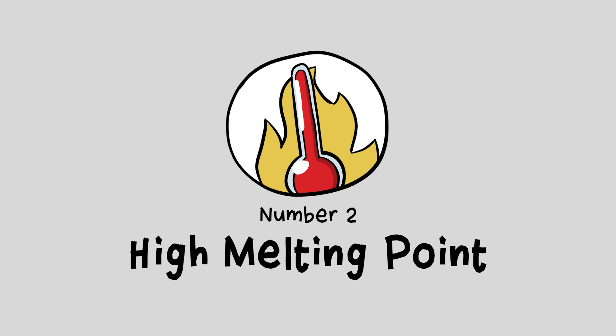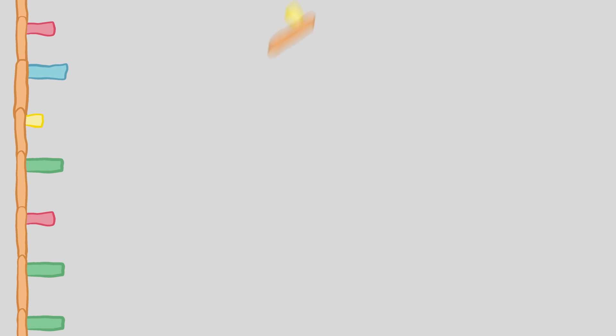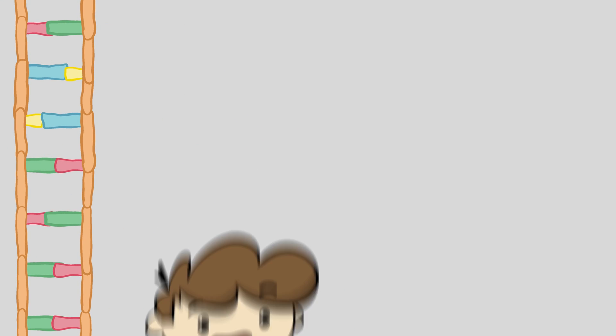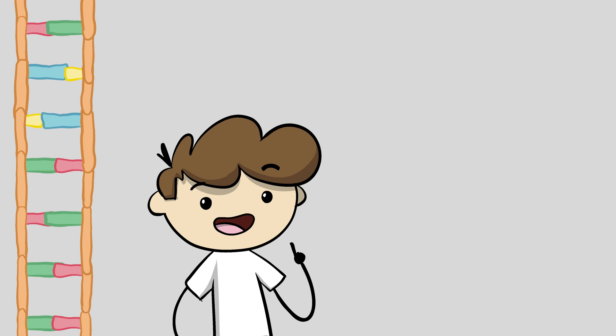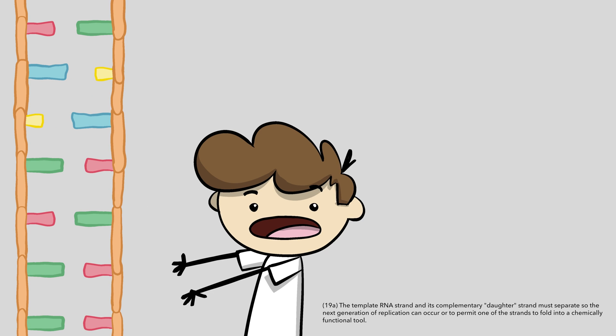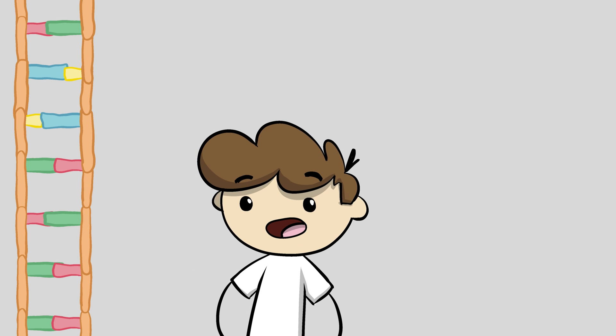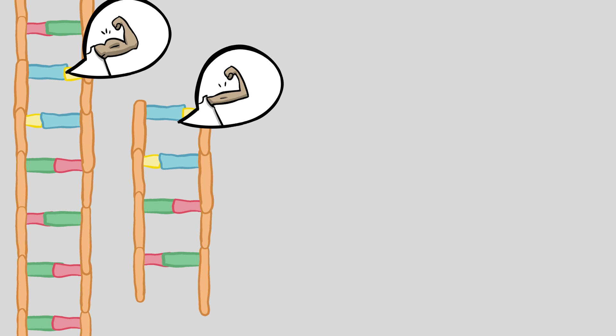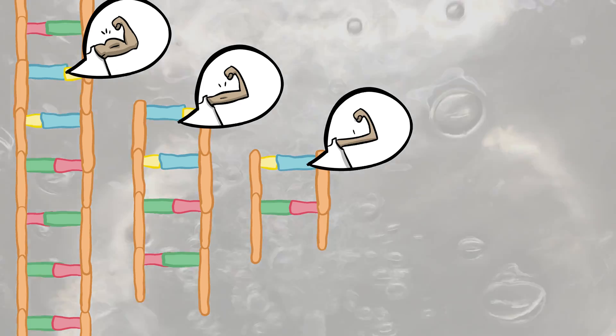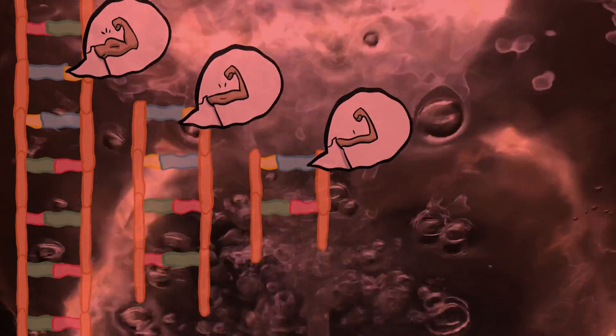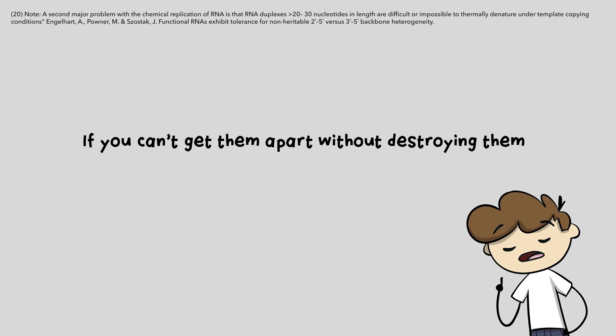Number two, high melting point of long RNAs. In order to be replicated, a single RNA strand has to have some friends to link up with, to make a complementary strand. And then, importantly, the two strands have to let go of each other. Problem is, the two strands want to link back together again. This is called annealing. And the longer the chain, the more tightly the two sides of the RNA are going to hold on, even at temperatures that would boil water and destroy RNA. If you can't get them apart without destroying them, it's a dead end.